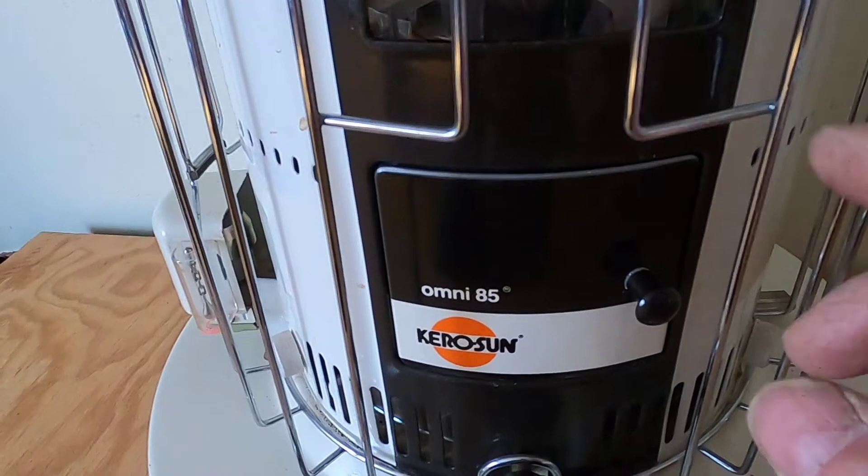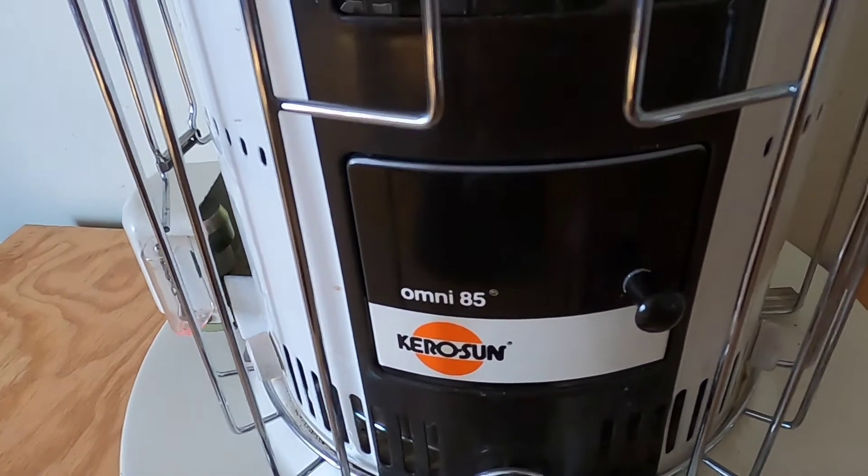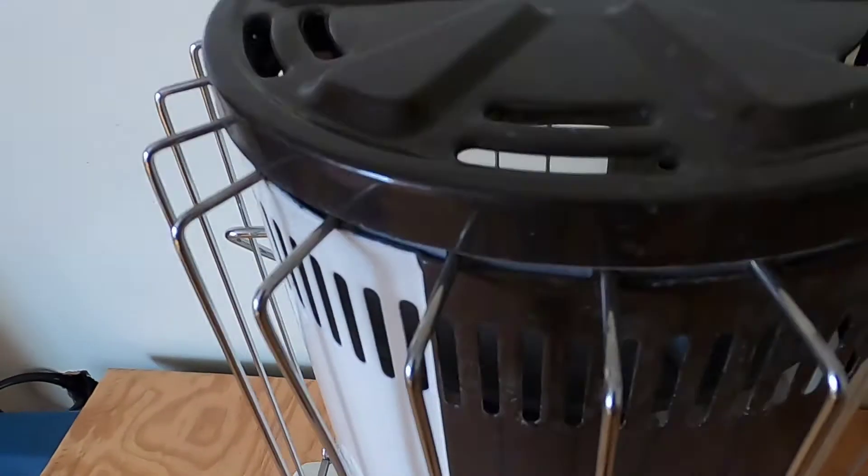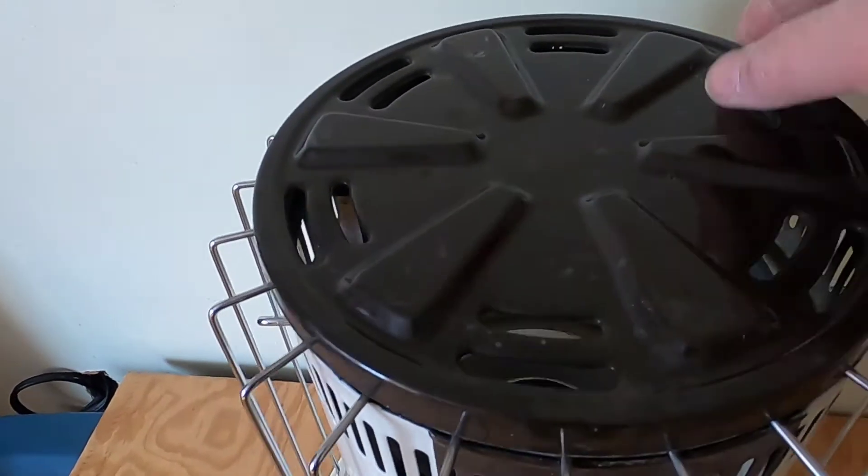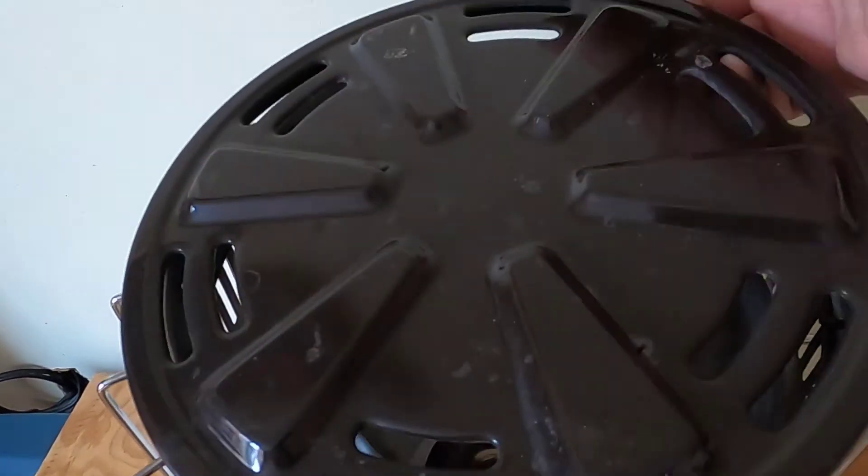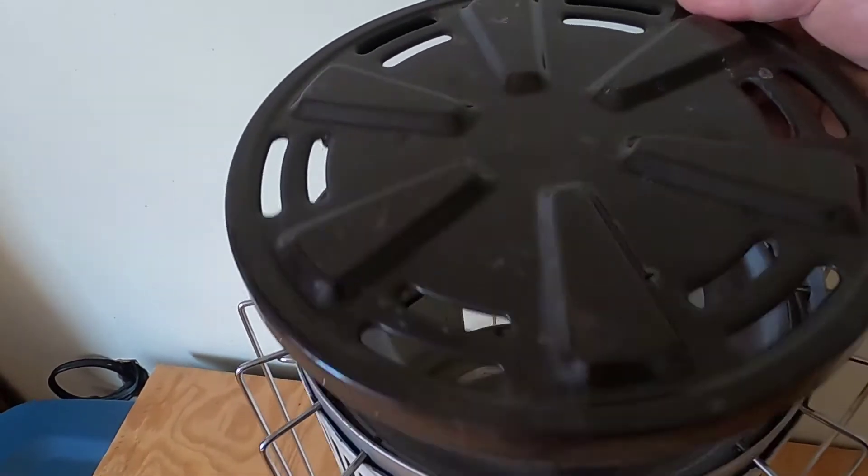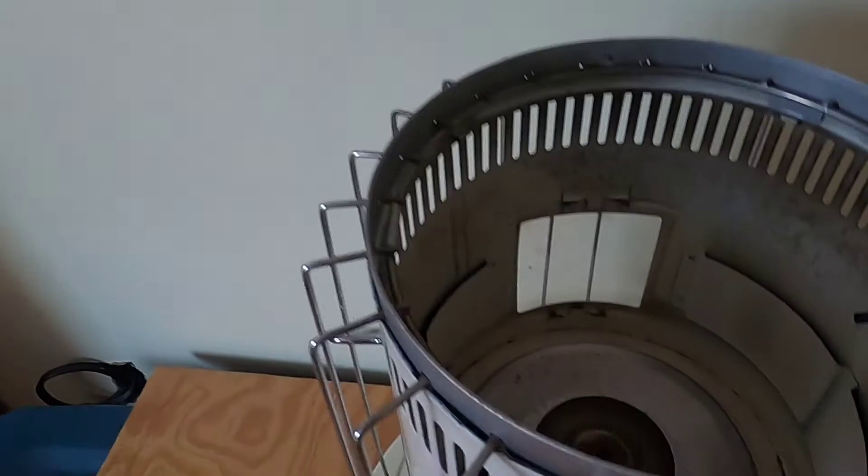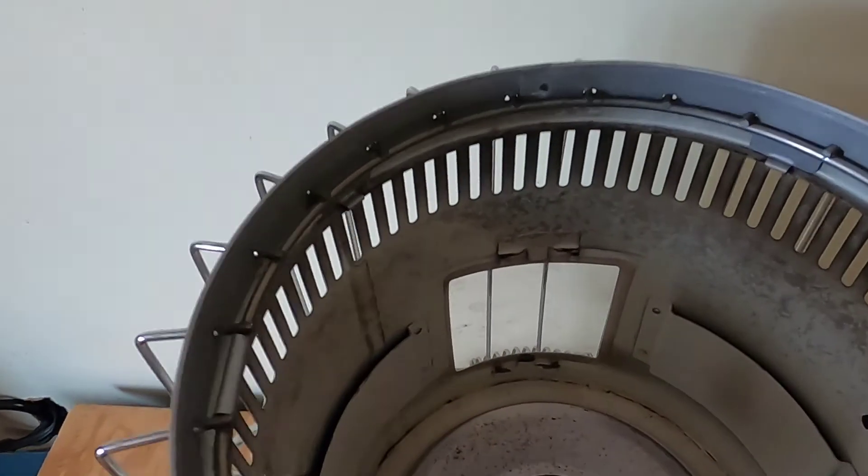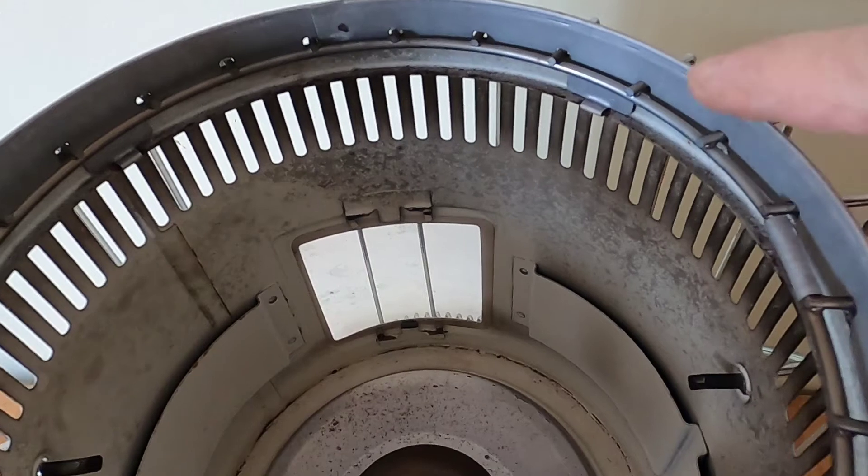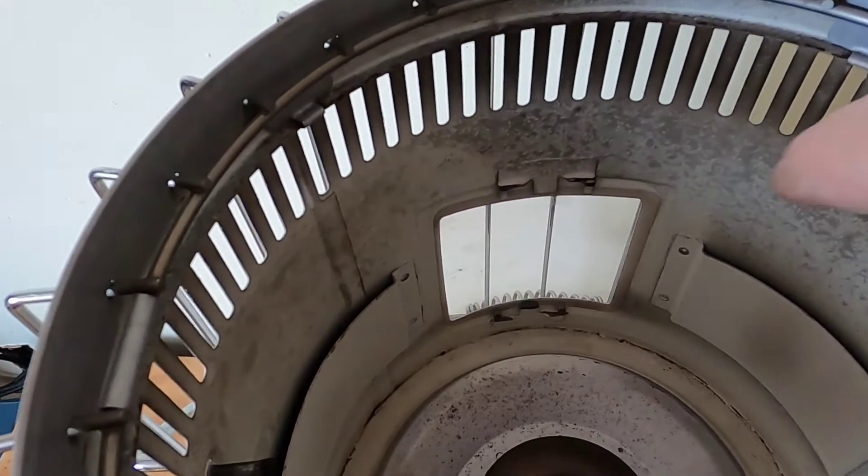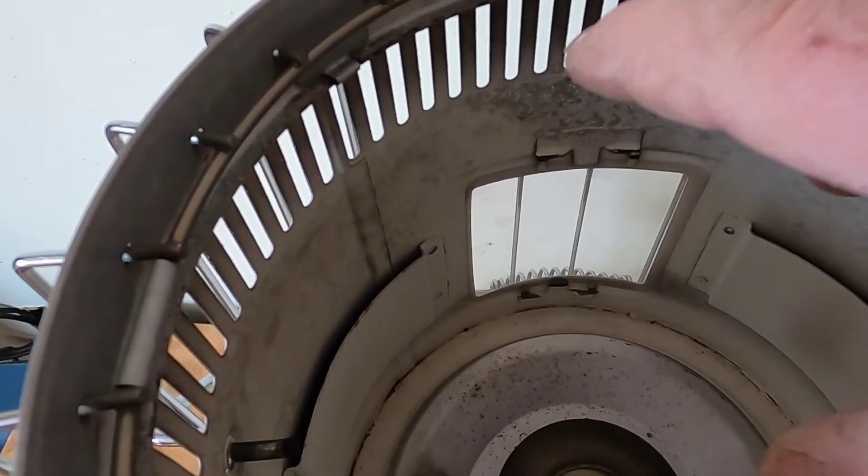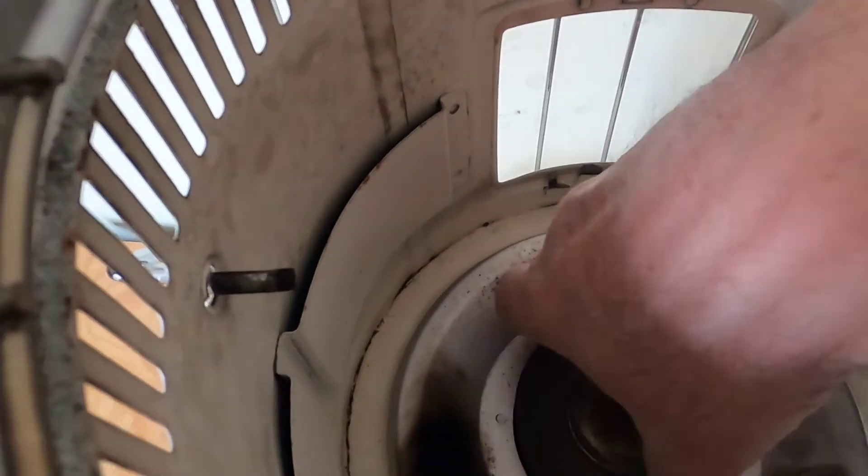You can't take the sides off, but to clean this wick, it's really not necessary. Come to the top, take the top off. Now this edge here is rolled over, it's not sharp, but some of these edges inside are sharp. You may want to wear gloves doing this.